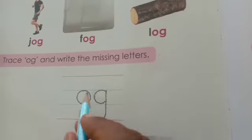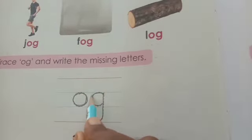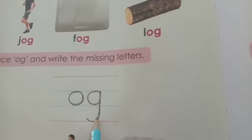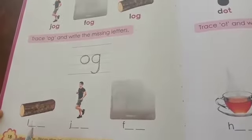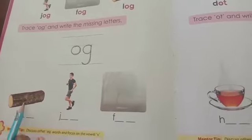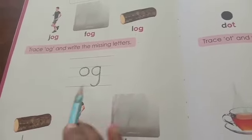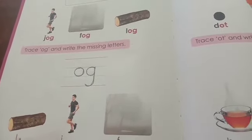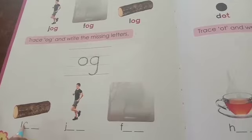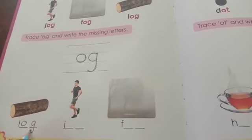C, A, children — O, G, O. Here some letters are missing. Shall we write, children? What picture is this? Yes — Log. Where is it? Yes, here it is. So you should write O, G — Log.